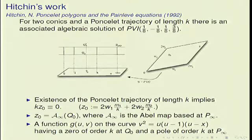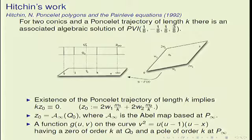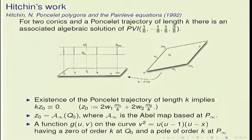Since both Painlevé 6 and the Poncelet theorem are related to the elliptic curve, we are less surprised by another result of Hitchin, which I will now explain: it relates the two. Hitchin started with a closed Poncelet trajectory of length k, and for every such trajectory he constructed an algebraic solution of the Painlevé 6 equation. A Poncelet trajectory of length k corresponds to a point of order k on the elliptic curve.